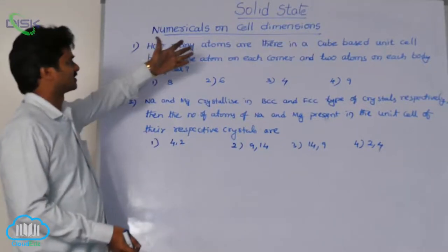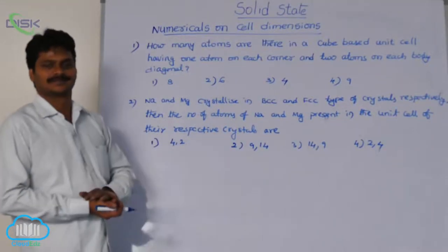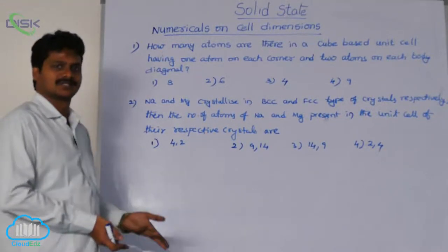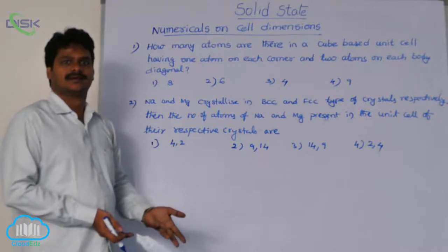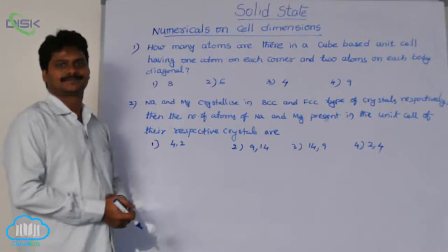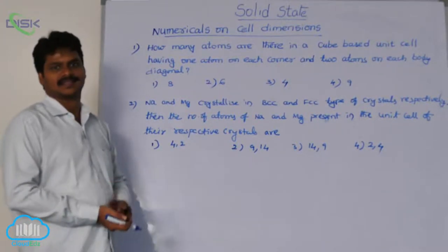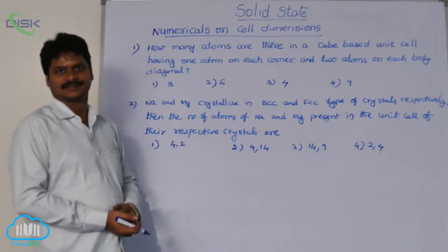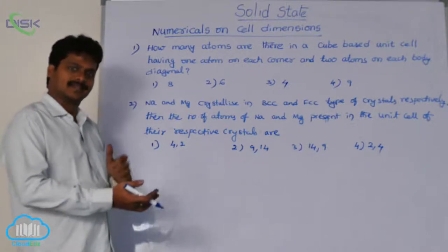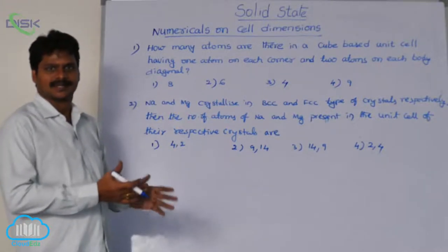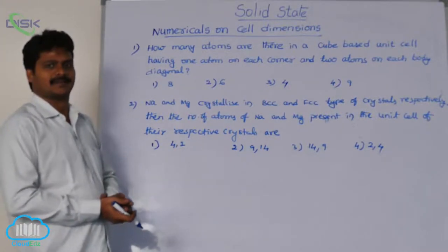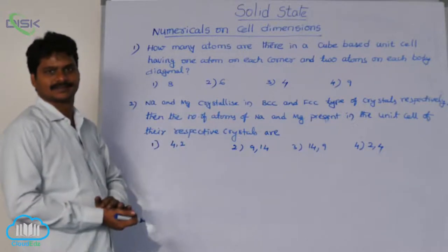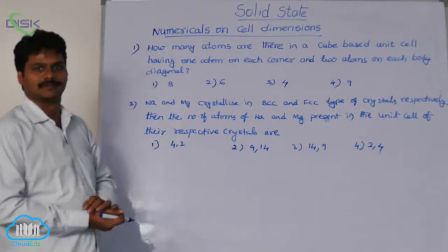Some numericals on cell dimensions. Cell dimensions means body diagonal length, edge length, face diagonal length, nearest neighbor's distance. Based on all these parameters, we have some numericals useful for objective 2.